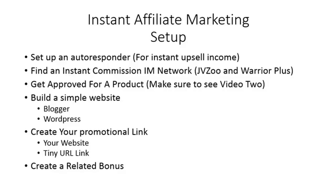As you set up for the affiliate marketing stage of Instant Cash Methods, you need to do all six things: get your autoresponder set up, find a product on one of the instant commission networks, get approved, put together a simple website, get your promotional link and shorten it with TinyURL, and then create a related bonus. This was our affiliate marketing setup video, and now we are ready to go through various instant cash affiliate marketing methods. Thanks, and I'll see you in the next video.